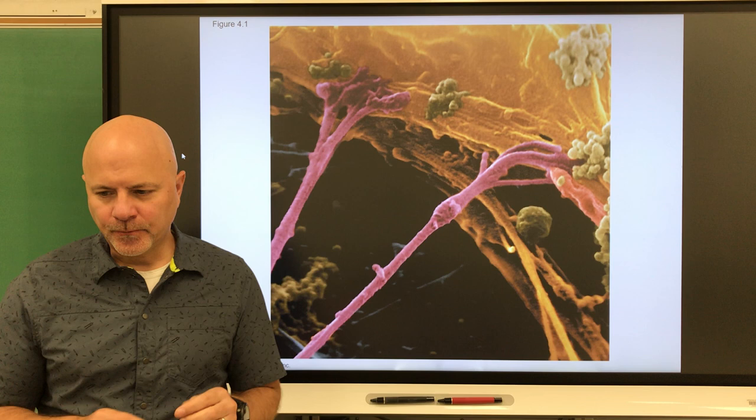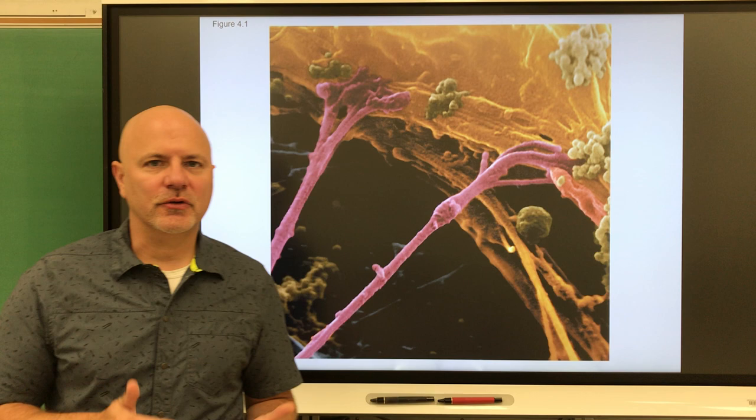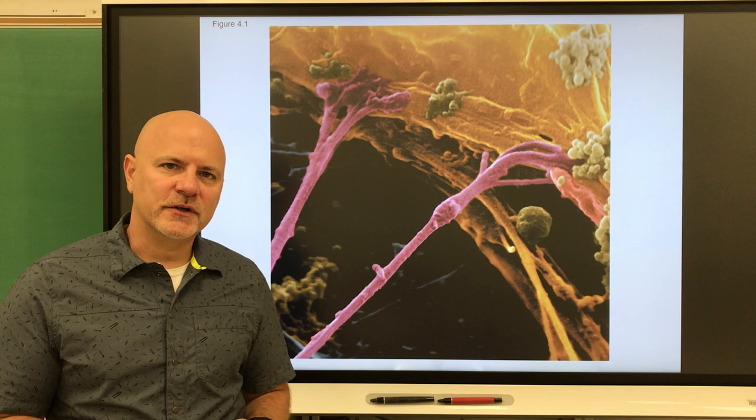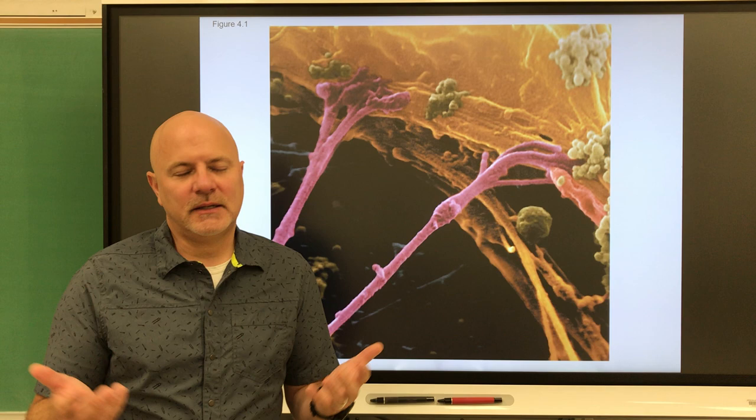Let's start Chapter 4 in Bio 101. Chapter 4 deals with the cell — the fundamental and structural unit of life. Before we get into the parts of the cell, which is essentially what we're going to look at in this chapter, let's go back and look at the people who basically helped us discover what cells are.